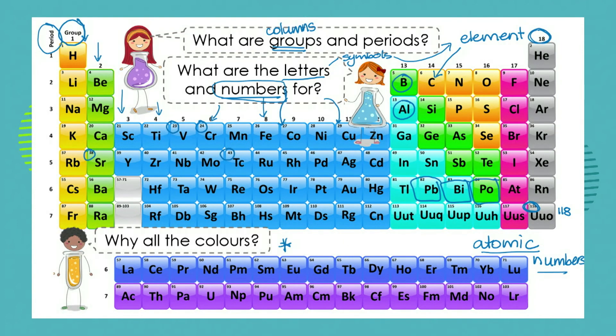But scientists, because they're scientists, must always name their rows and columns with special terms. So the columns are called the groups. Going across, the rows are also numbered and the rows are called the periods. And now we start to understand why this whole thing is called a periodic table — it's a table with rows and groups or columns of different elements.